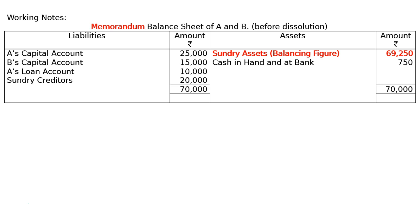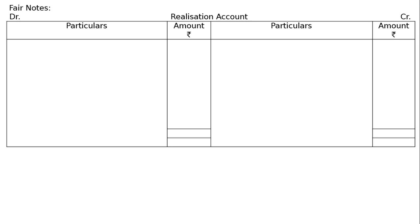This is the item which we need for dissolution. Then prepare the realization account. Draw the format and on the debit side enter sundry assets Rs. 69,250, and on the credit side enter sundry creditors Rs. 20,000.